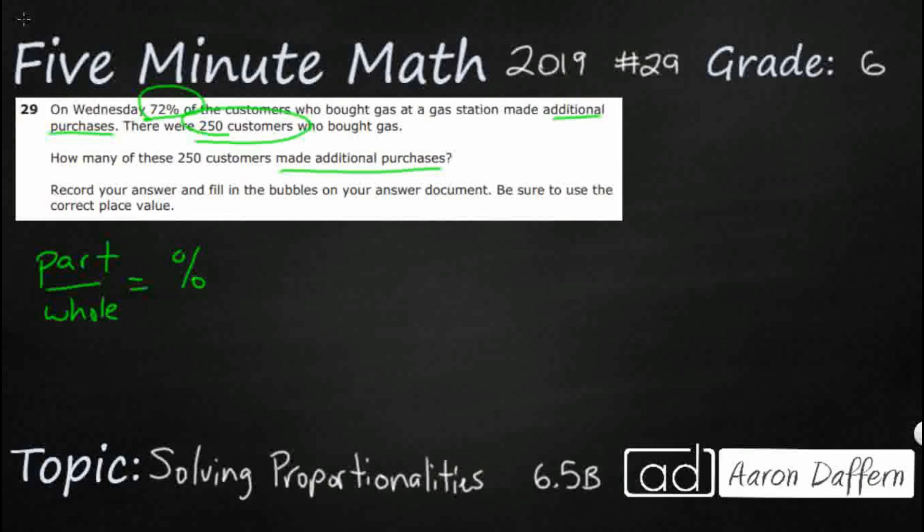So what is our part? Well our part is our unknown. That is how many made additional purchases. Our whole, they told us is 250. And the percent of that is they already told us is 72%. Now how do we use that for cross multiplication? Well it helps that we've already got a fraction on the left but the 72% we need to turn that into a fraction.